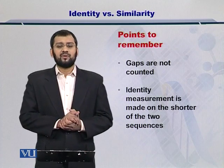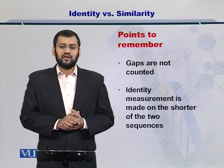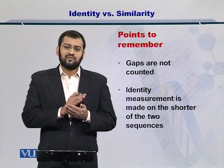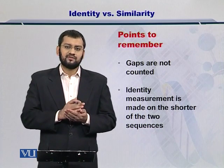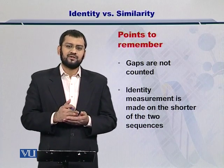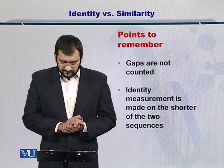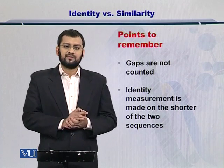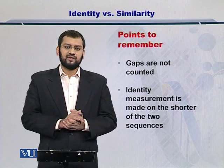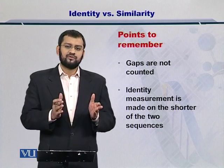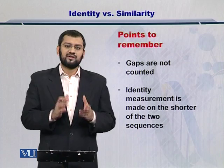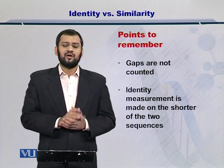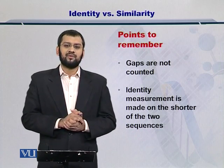The points to remember in this case: number one, gaps are not counted — if you have a gap in the sequence, that is not considered as a match and is left out. Second, identity measurement is always made on the shorter sequence. As we just saw in the previous example, the shorter sequence was five nucleotides long, so we consider five as the smaller length. These two points are very important while computing the identity between sequences.